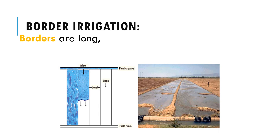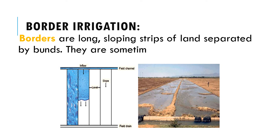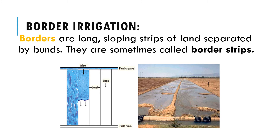Borders are long, sloping strips of land separated by bunds, sometimes called border strips. Irrigation water can be fed to the border in several ways: opening up the channel bank using small outlets or gates, or by means of siphons or spiles. Siphons are small curved pipes that deliver water over a ditch bank. Spiles are small pipes buried in the ditch bank. A sheet of water flows down the slope of the border, guided by the bunds on either side.